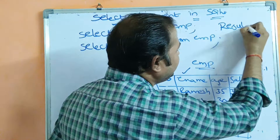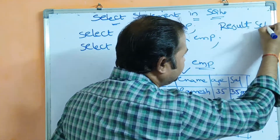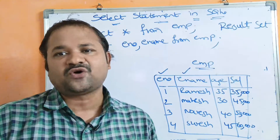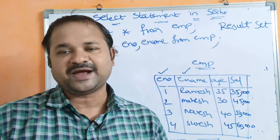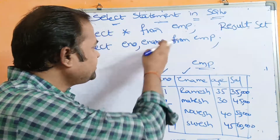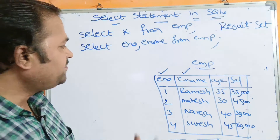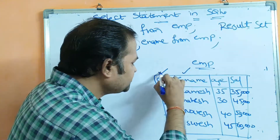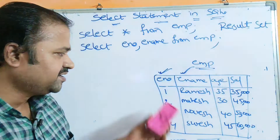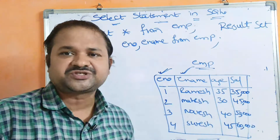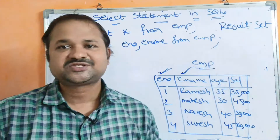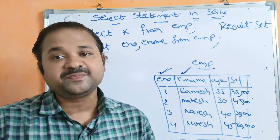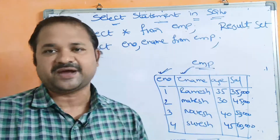By using the SELECT command, we can select data from the table, and the corresponding data is stored in a table called the result set. The result set contains all the rows returned by the corresponding SELECT command. So when we execute SELECT enum, ename FROM employee, those two columns will be stored in the result set table.